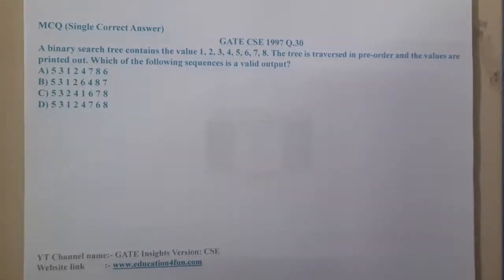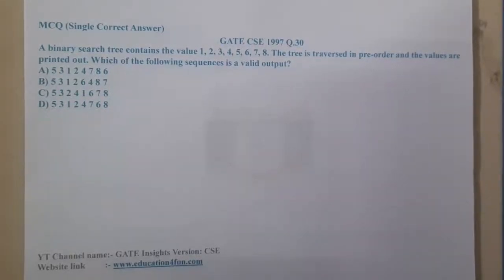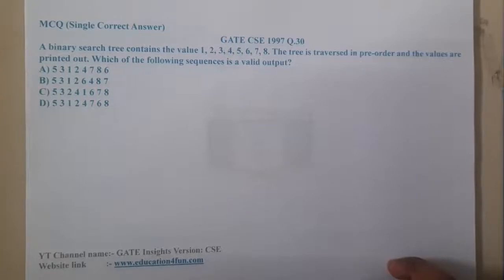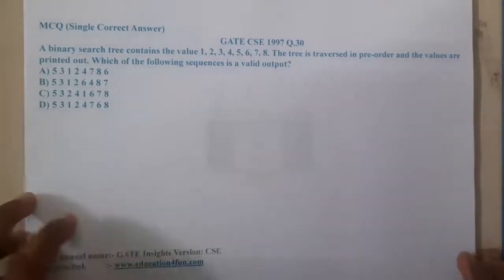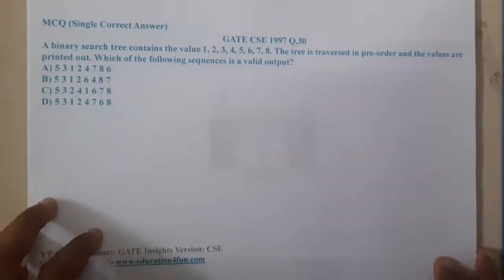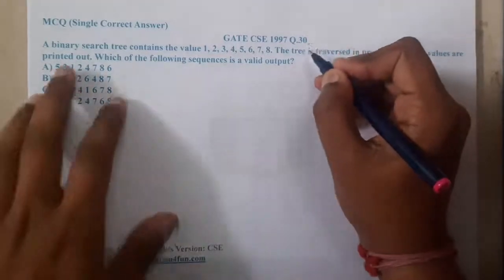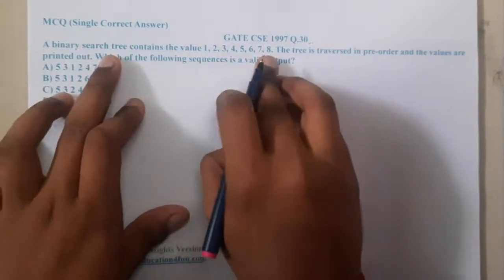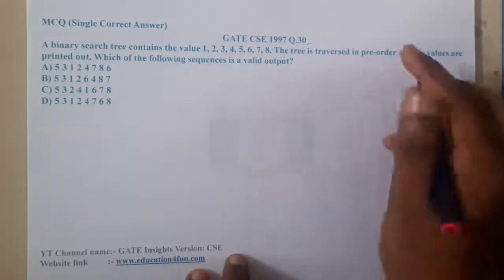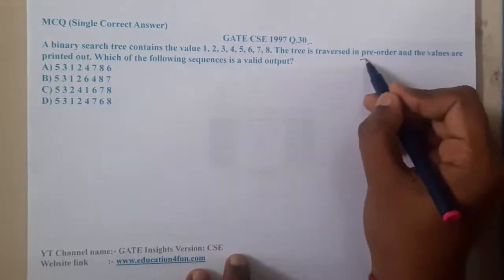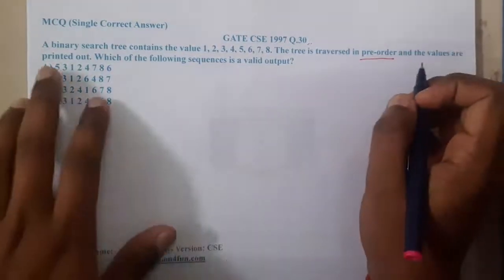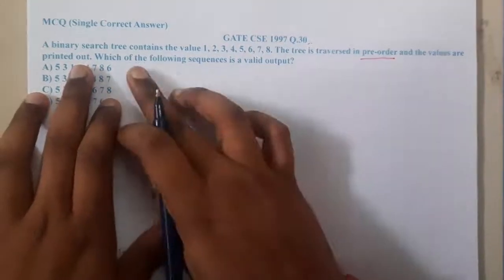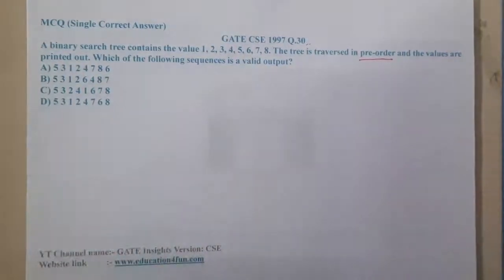Hello guys, welcome back to our next lecture. In this lecture let us go through the next question: GATE CSE 1997 question 30. This question belongs to binary search tree. A binary search tree contains values 1 to 8, the tree is traversed in pre-order and the values are printed out. Which of the following sequence is a valid output?